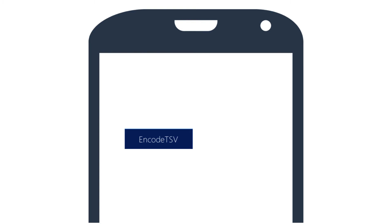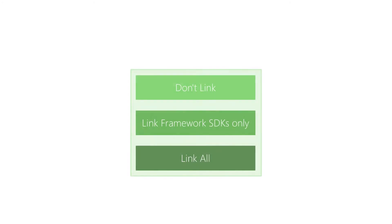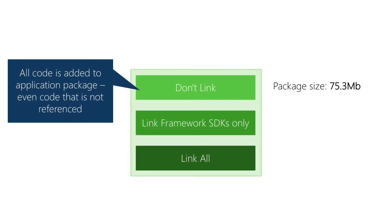We've got three options available. The first is 'Don't Link' — do nothing. All the assemblies that you're referencing are simply added to your application package. For debug builds, this should be the option you choose as it's the quickest compilation type. However, this also generates the largest application package.